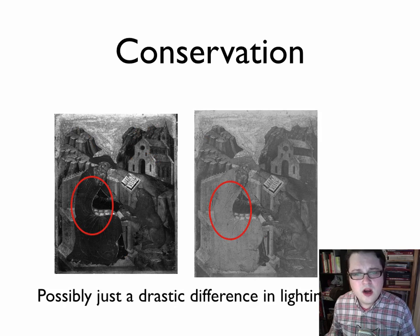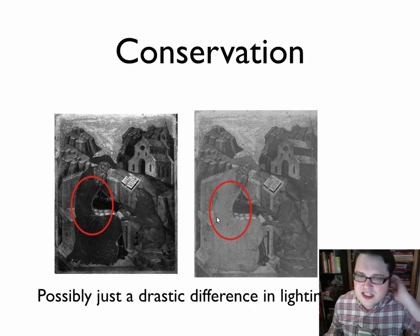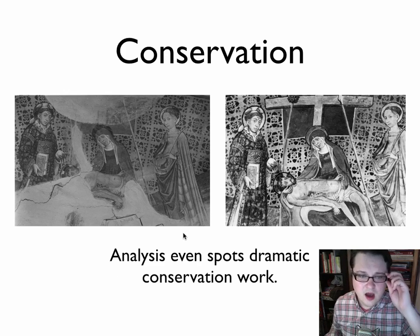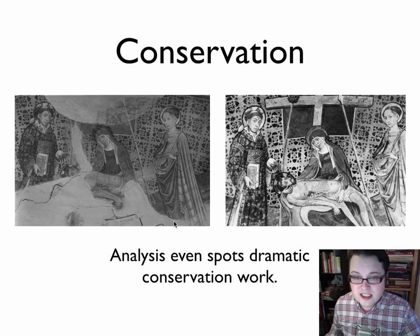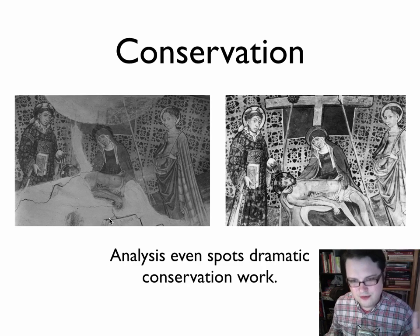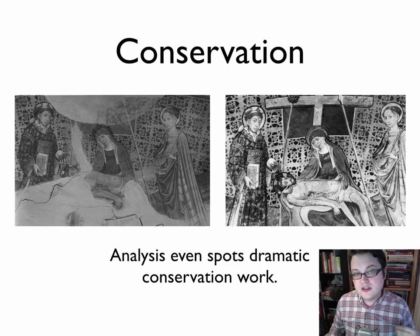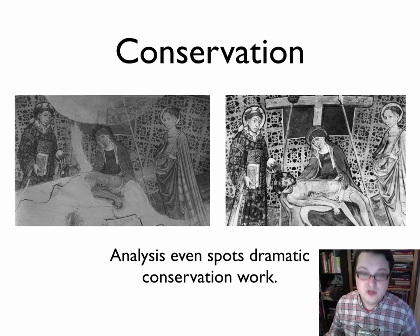There are additional cases where it's hard to tell if the differences are just lighting or possibly conservation. This is definitely a case where you can see one image showing the work in a very broken state — it's possible this is before and after conservation, or it could have been damaged at some point. These are the questions researchers can and should look at. The algorithm itself won't be able to answer these questions — it'll just make these discoveries and leave it to the researcher to figure out what's actually going on.